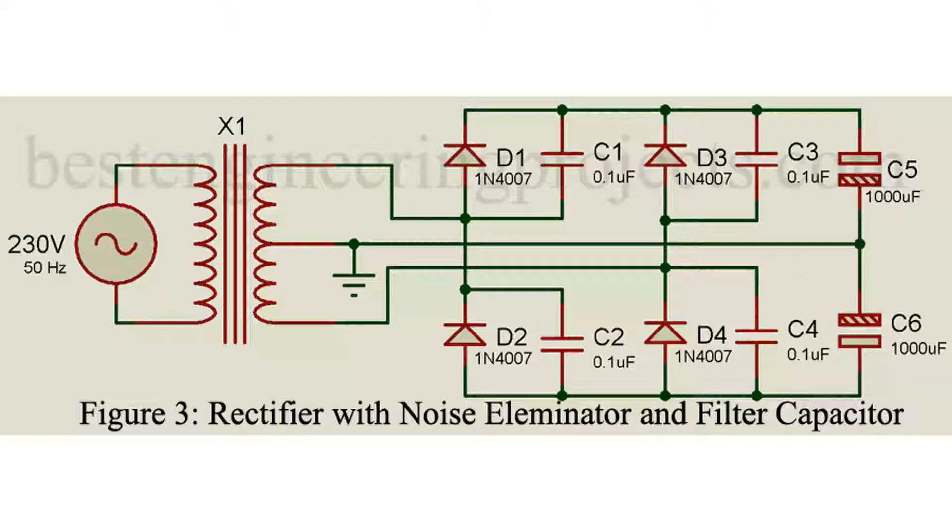While connecting these filter capacitors, C5 and C6, we have to consider a few things. As we can see in the circuit diagram, electrolytic capacitor C5 is connected normally. That is, positive lead of this capacitor is connected to positive supply and negative lead is connected to ground.